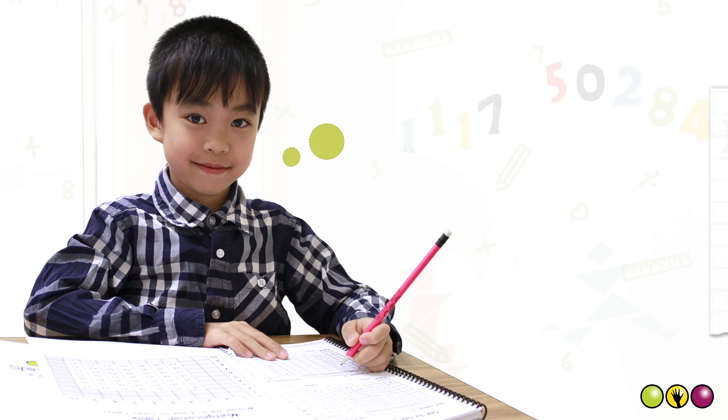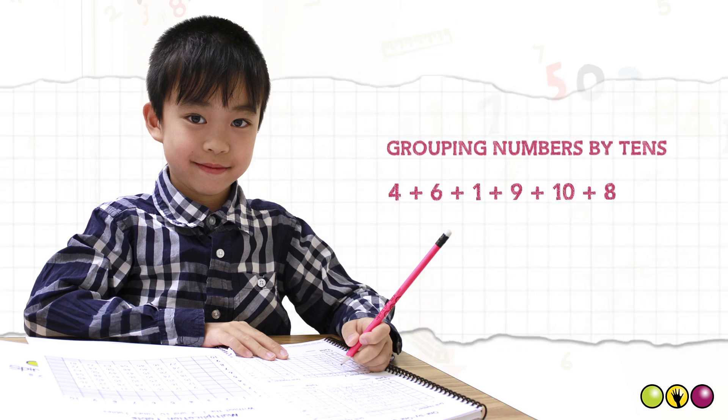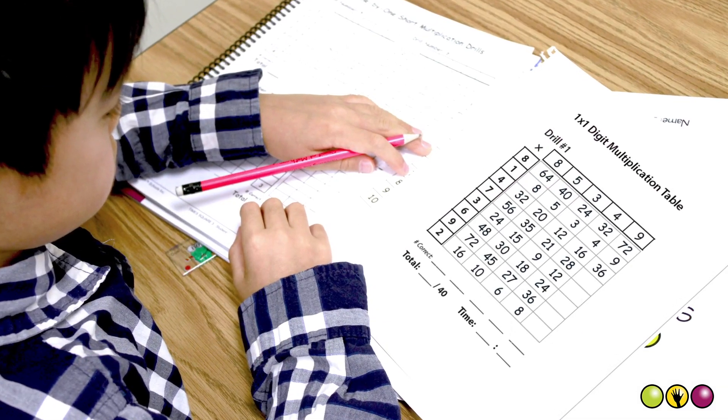By the end of grade one our kids have mastered grouping numbers by tens to quickly and efficiently add and subtract integers and can handle one by one digit multiplication and division.